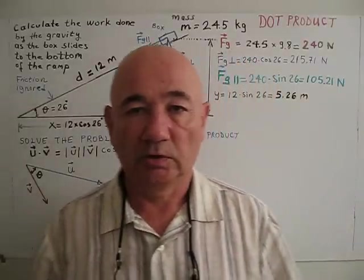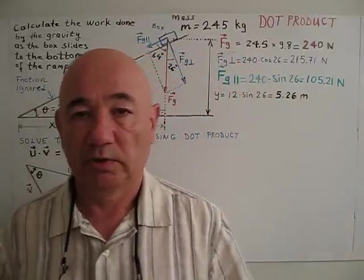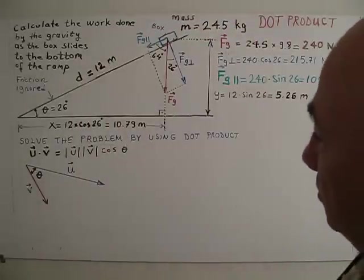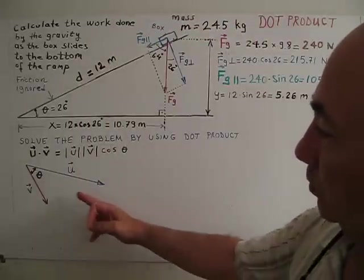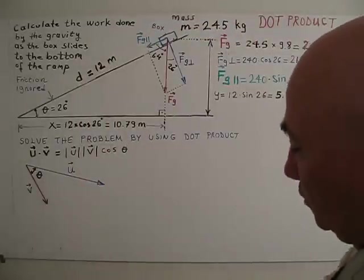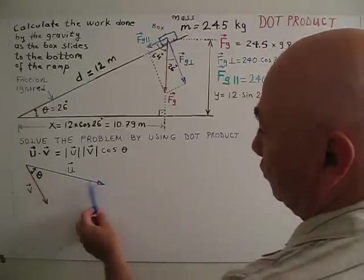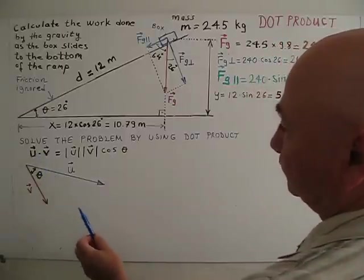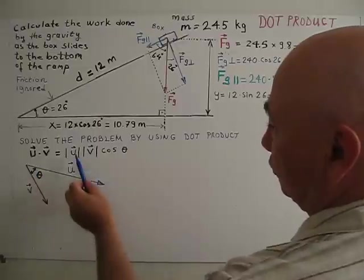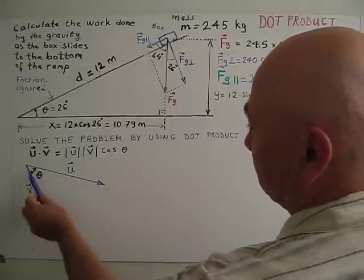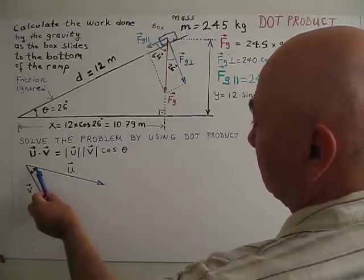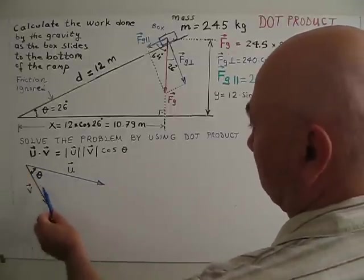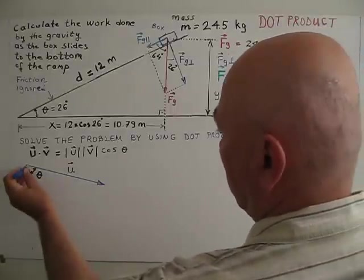Today, I am going to talk about the application of a dot product. As you know, dot product formula of two vectors, so vector U and vector V, dot product U dot V equals magnitude of U times magnitude of V times cosine theta between these two vectors, so these two vectors tail to tail.